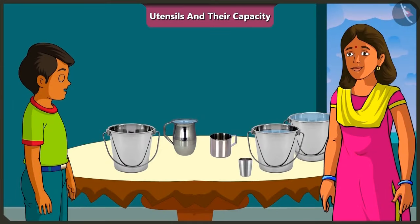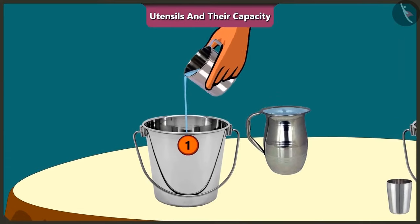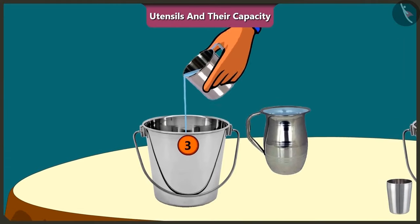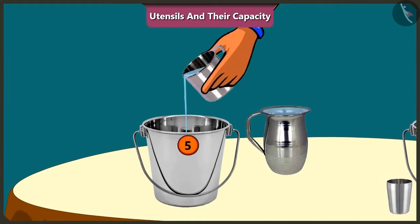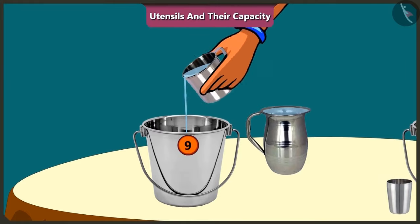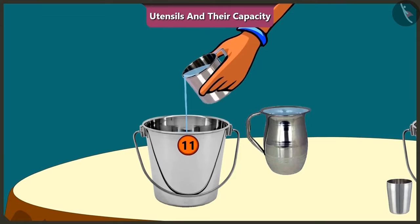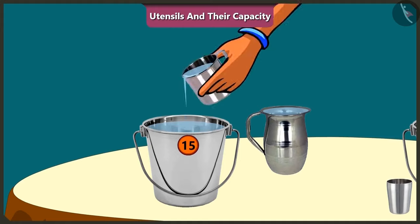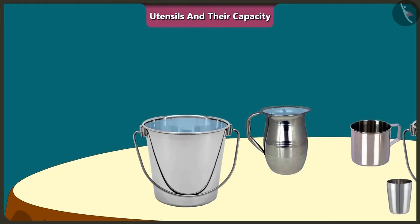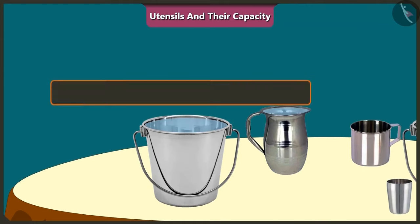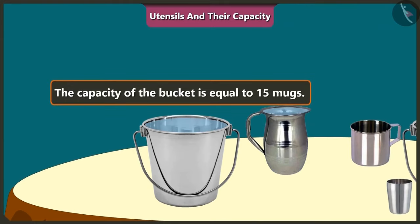Come on, let's fill the bucket using a mug. 1, 2, 3, 4, 5, 6, 7, 8, 9, 10, 11, 12, 13, 14, 15 mugs of water filled up the whole bucket completely. The capacity of this bucket is equal to 15 mugs of water.